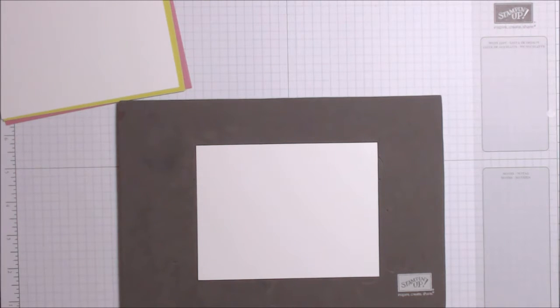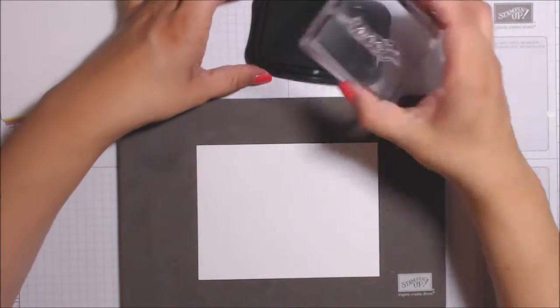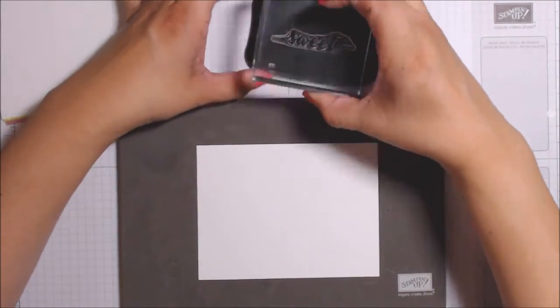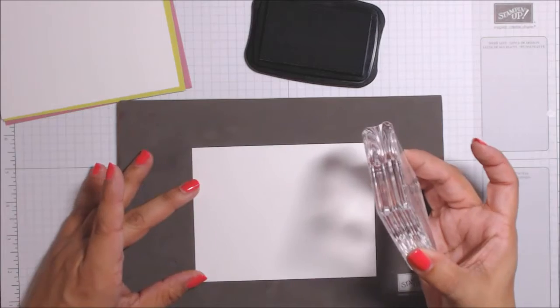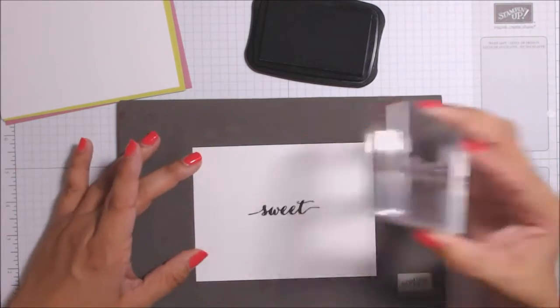I again use the Happy Birthday Gorgeous stamp set for the flowers, the same as before for the other ones. I'm using my piercing mat as well as Memento ink for the stamping.